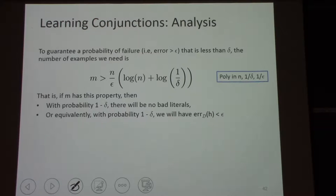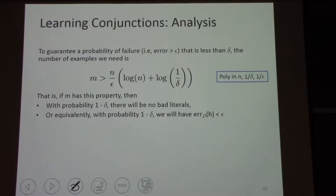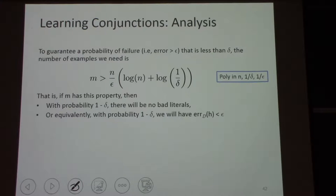What we have here is a guarantee that your classifier is approximately correct — but it's not guaranteed to be approximately correct, it's probably approximately correct. That's actually the name — probably approximately correct — PAC. So what we have here is a PAC guarantee. For this particular case, we assumed a particular hypothesis class and a particular learning algorithm. Next I'm going to define PAC and then talk about Occam's razor, where we'll derive a very similar statement independent of the hypothesis class and the learning algorithm.